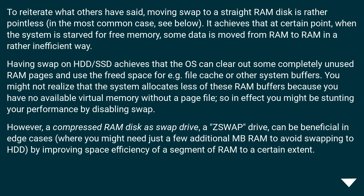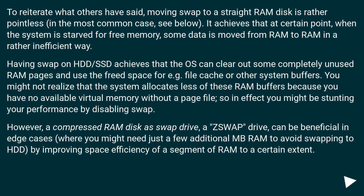To reiterate what others have said, moving swap to a straight RAM disk is rather pointless in the most common case. It achieves only that, at a certain point when the system is starved for free memory, some data is moved from RAM to RAM in a rather inefficient way. Having swap on HDD or SSD achieves something more useful: the OS can clear out completely unused RAM pages and use the freed space for file cache or other system buffers. You might not realize the system allocates less of these RAM buffers without a page file — so in effect you might be stunting your performance by disabling swap. However, a compressed RAM swap drive can be beneficial in edge cases, where you might need just a few additional MB of RAM to avoid swapping to HDD, by improving space efficiency of a segment of RAM.